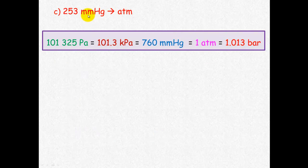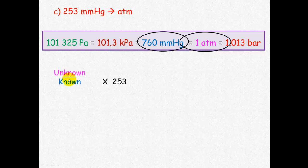And for the last example, millimeters mercury to atmospheres. Atmospheres are unknown, millimeters mercury is known, so it's unknown divided by known times the information we have. That's 1 atmosphere divided by 760 millimeters mercury multiplied by 253, which equals 0.333 atmospheres.